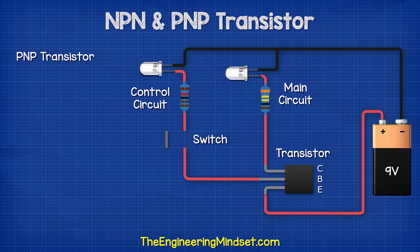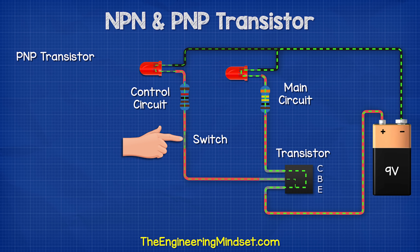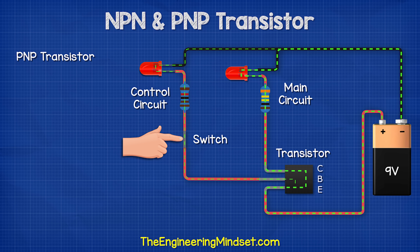With a PNP transistor, we again have the main circuit and the control circuit. But now the emitter is connected to the positive of the battery. The main circuit is off until we press the switch on the control circuit. We can see with this type that some of the current flows out of the base pin and returns to the battery. The rest of the current flows through the transistor and through the main LED and then back to the battery.